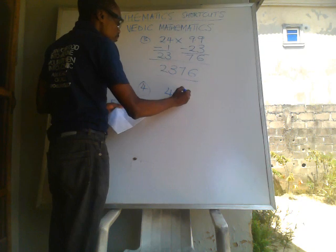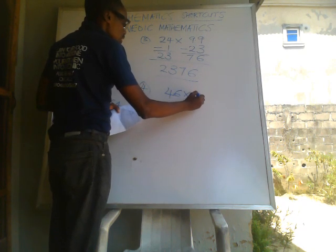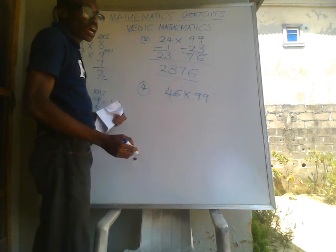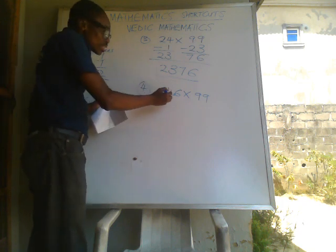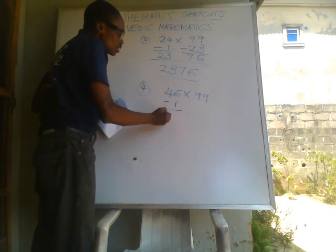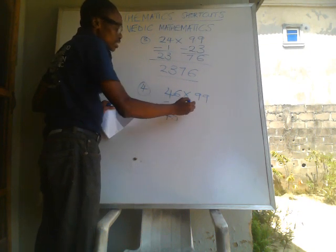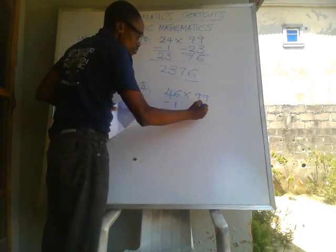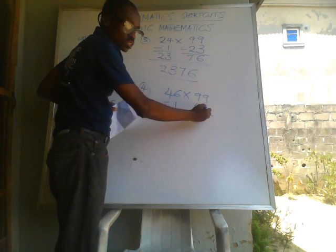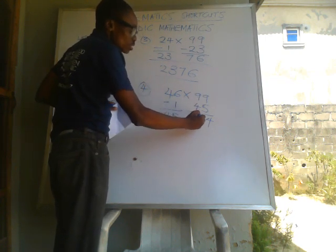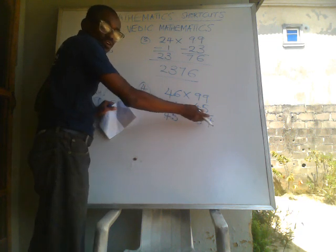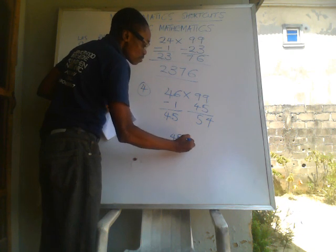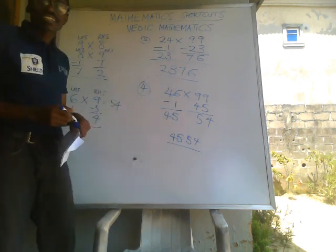Next example: 46 times 99. Using the same method, 46 minus 1 gives us 45. Then 99 minus 45: 9 minus 5 is 4, and 9 minus 4 is 5. Combining everything together, our final answer is 4554.